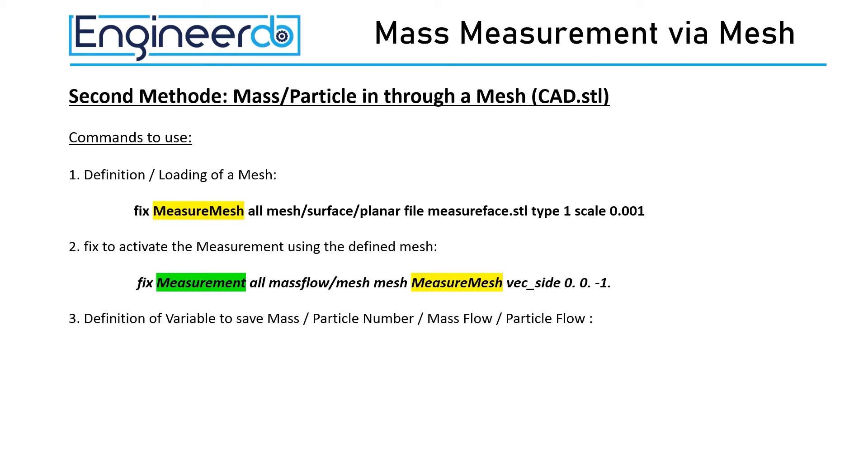To access the data of the FIX measurement we must define variables where we want to save the data. In the first variable, massTotal, we want to save the total mass that have passed our measure mesh. This data is calculated and saved in the first field of the FIX measurement.